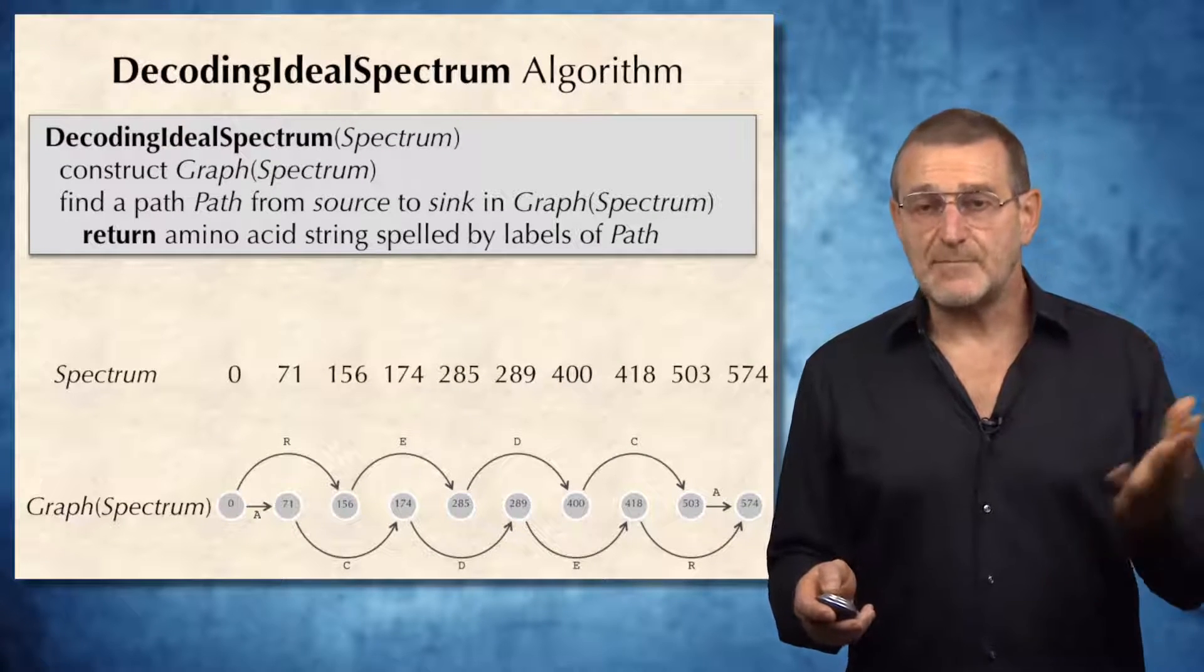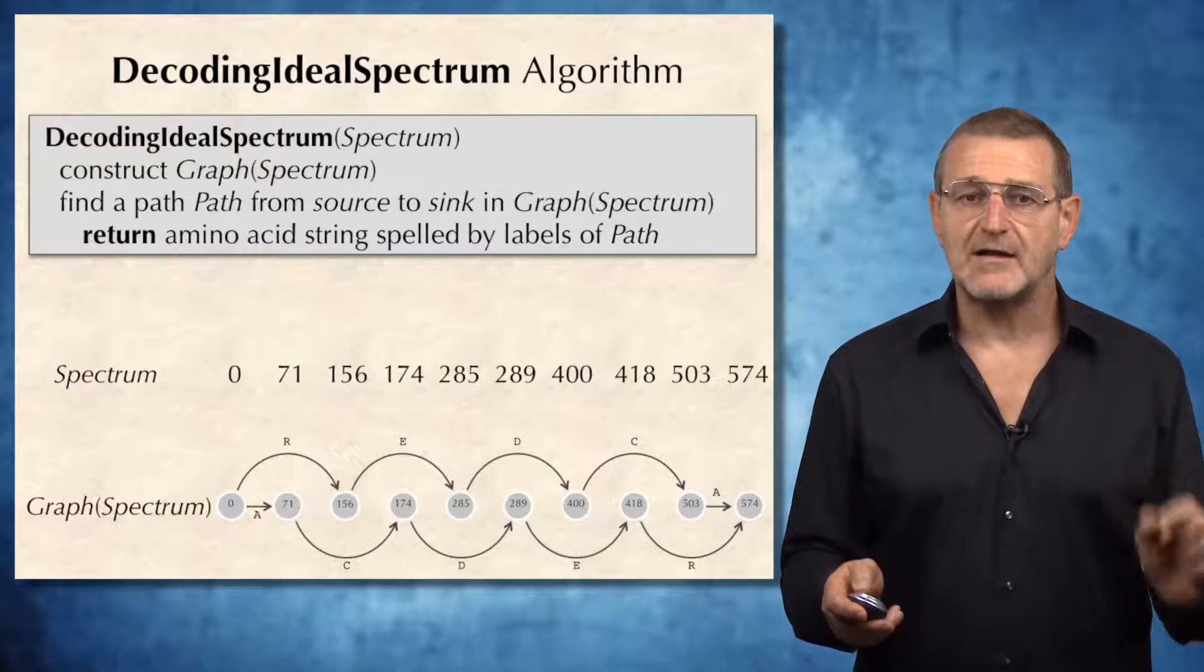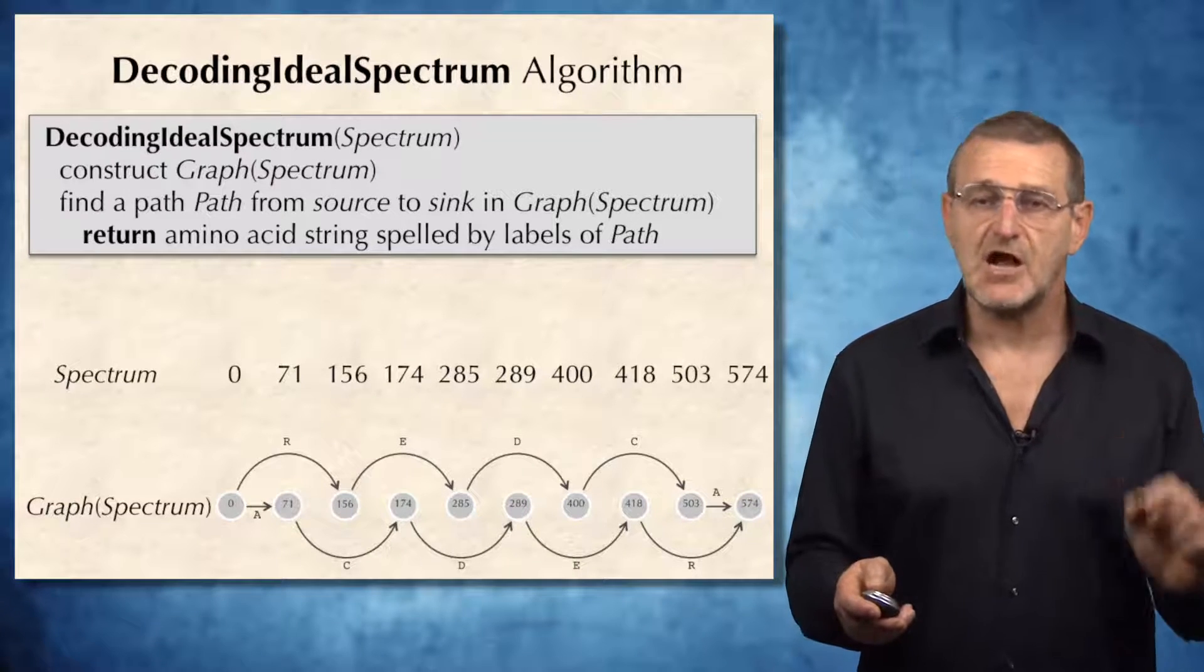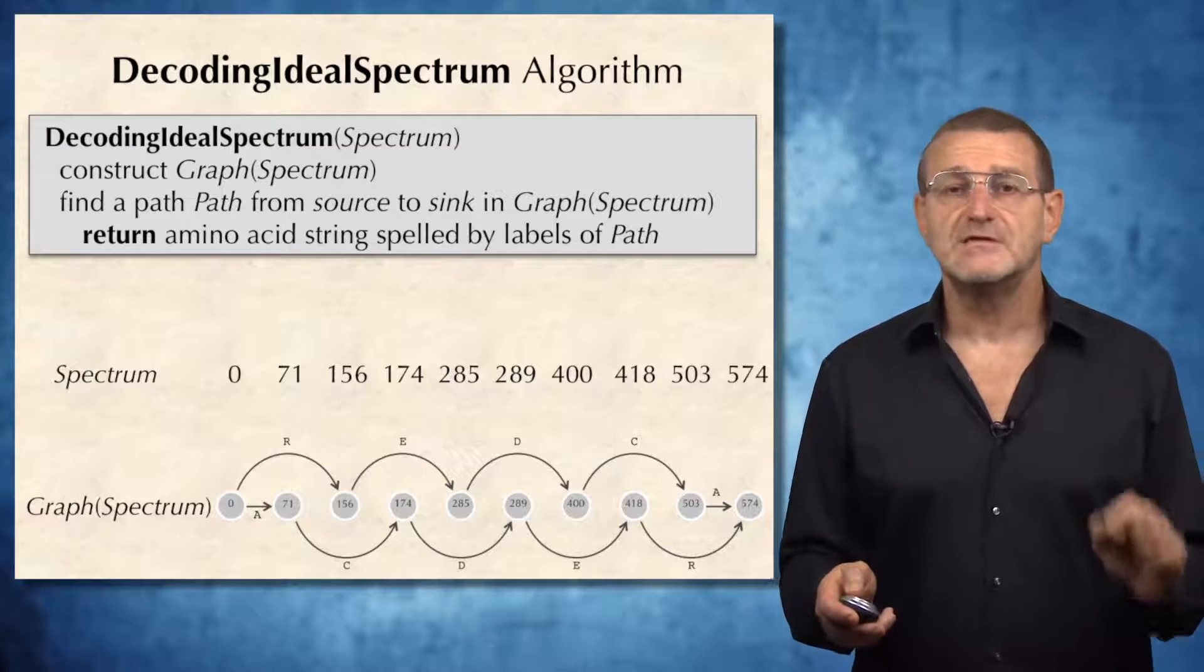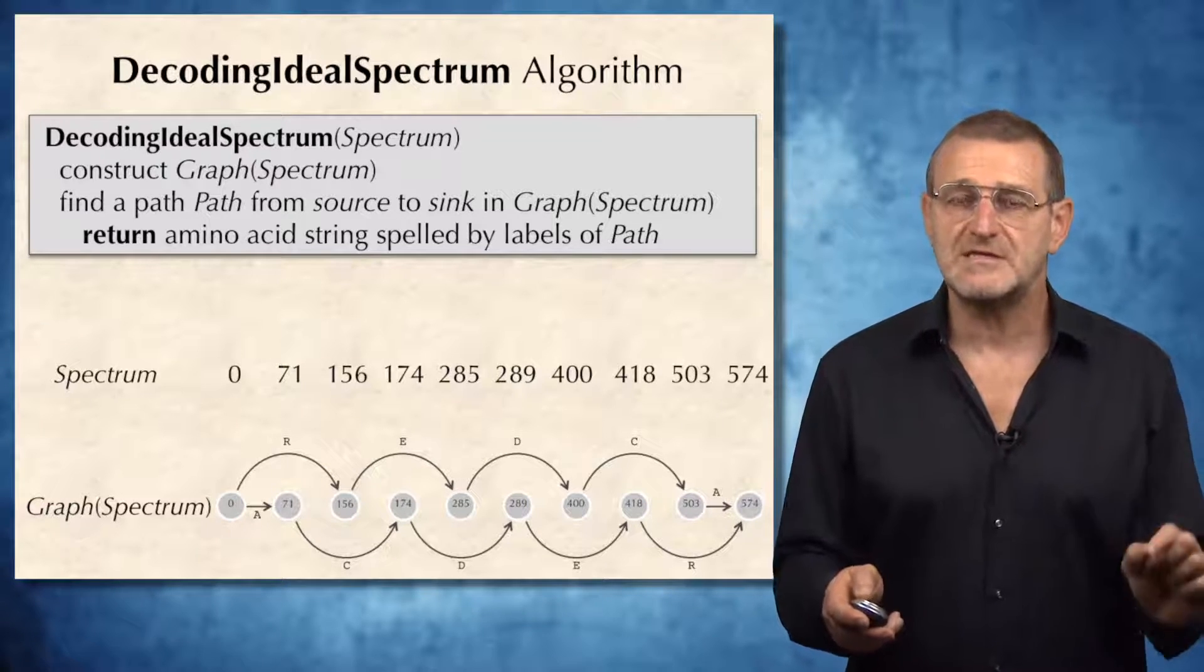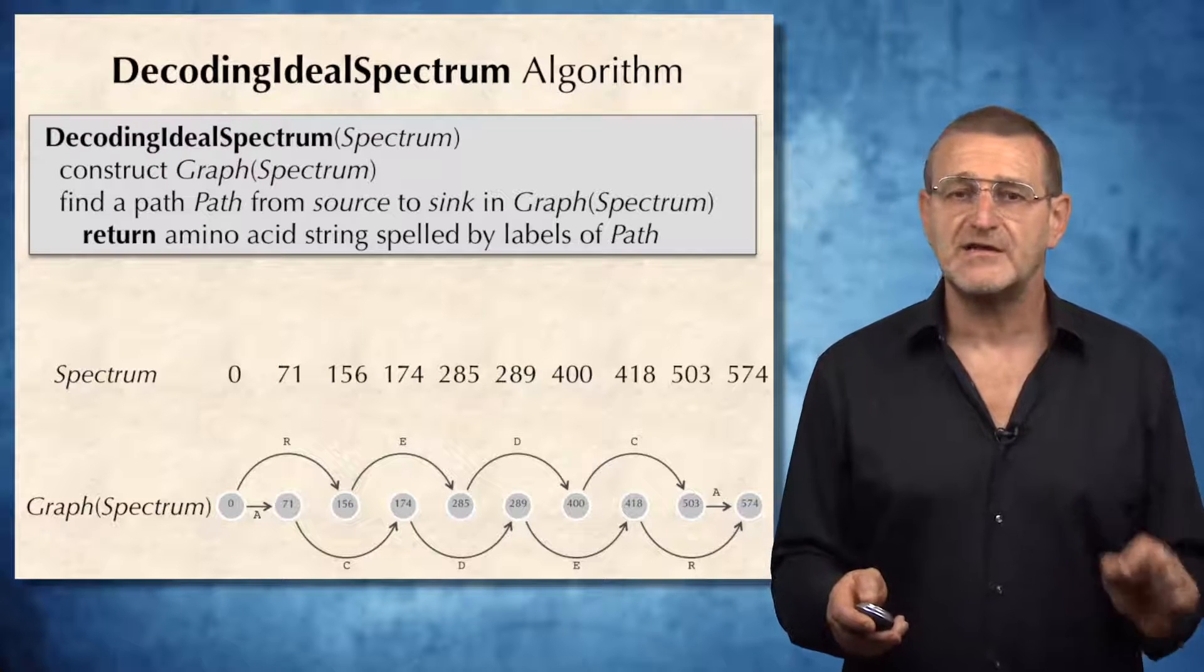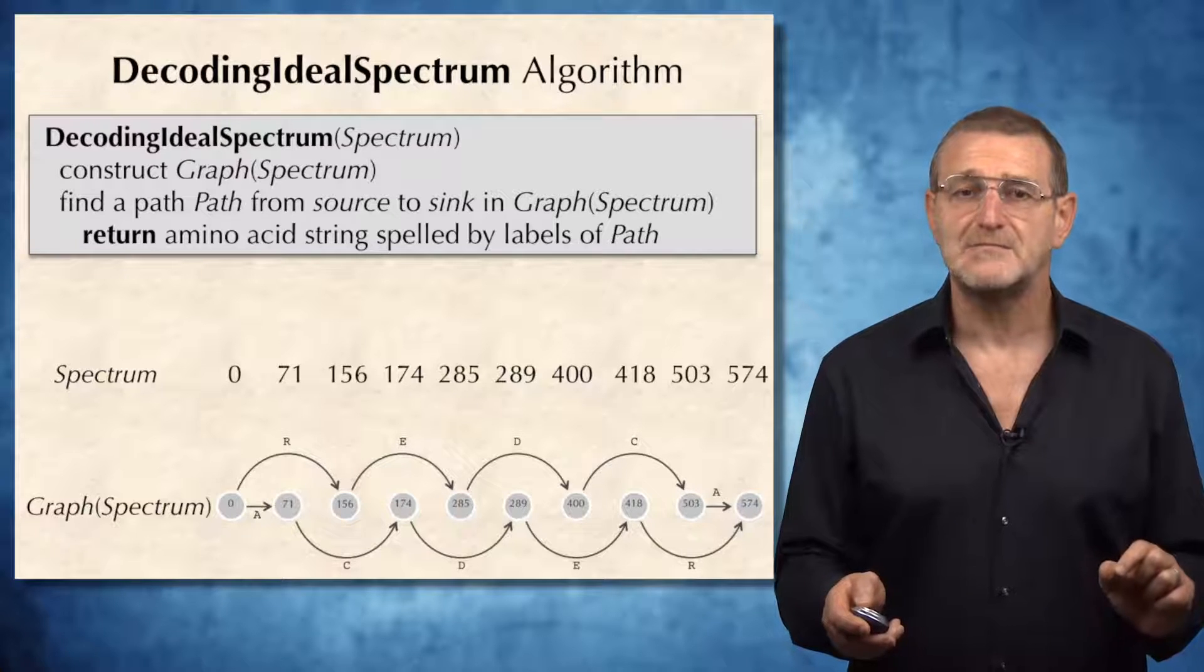As a result, I propose the following decoding ideal spectrum algorithm. First, construct graph from spectrum. Second, find a path from source to sink in the resulting graph. And finally, return amino acid string spelled by this path.